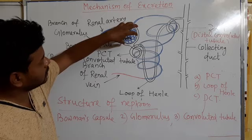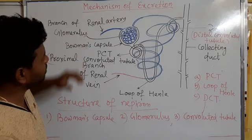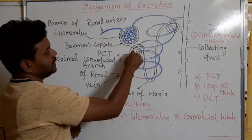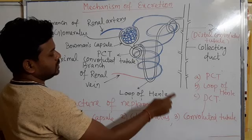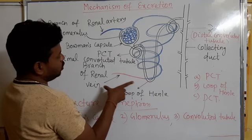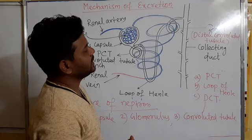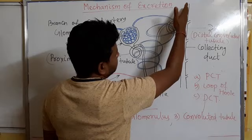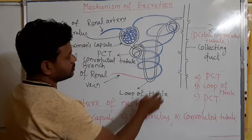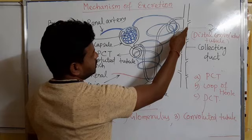So to summarize the structure: a cup-like structure is there known as Bowman's capsule. Inside it is a group of capillaries called the glomerulus. Then a long convoluted tubule extends from the Bowman's capsule, divided into three parts — PCT, Loop of Henle, and DCT. There is also a collecting duct, which is not part of the nephron, but it collects all the urine. Different nephrons join to this collecting duct, and as it collects all the urine or waste from the nephrons, it is called the collecting duct.